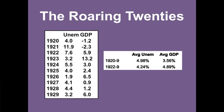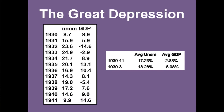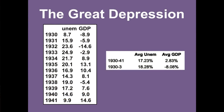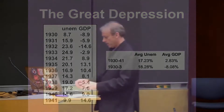Unemployment was as low as 1.9% in 1926, 3.2% in 1929, rising as high as 24.9%. And of course, what did they try to do in 1937? Well, the worst of the recession is over — let's try to balance the budget. And that worked out really well, as you can see. Hopefully history will not repeat itself.